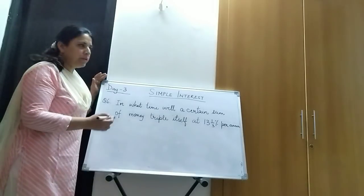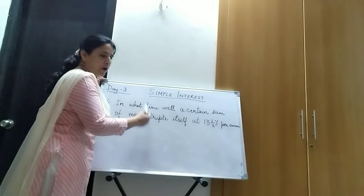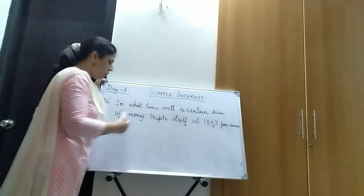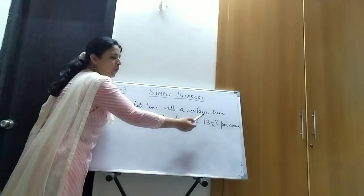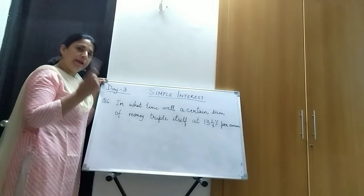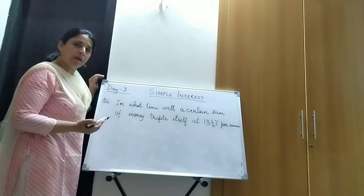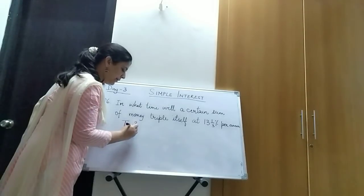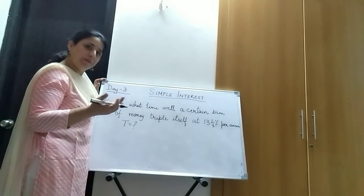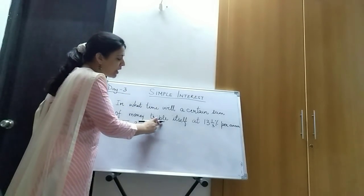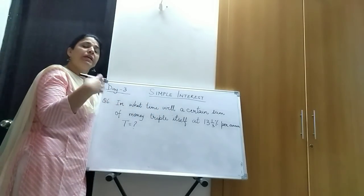The question is number six from your exercise, which says: in what time will a certain sum of money triple itself at 13 and one-third percent per annum? Let us understand what is given. They are asking you to calculate the time — that is the question mark. A certain sum of money — you don't even know the principal.